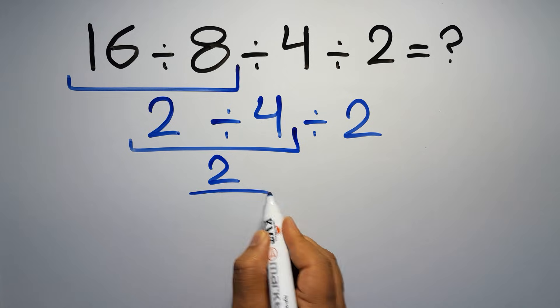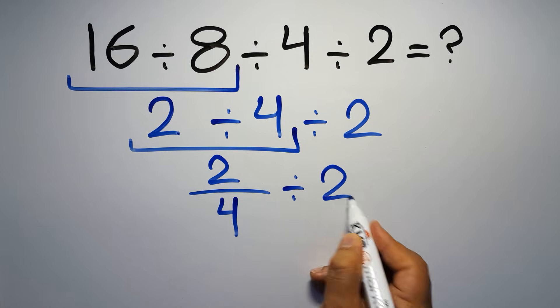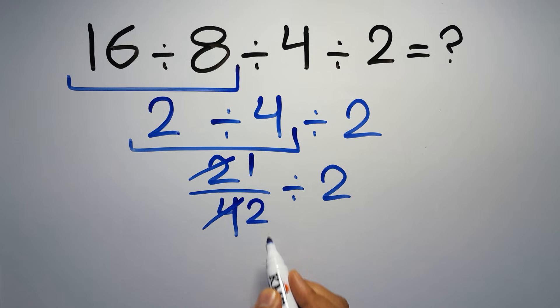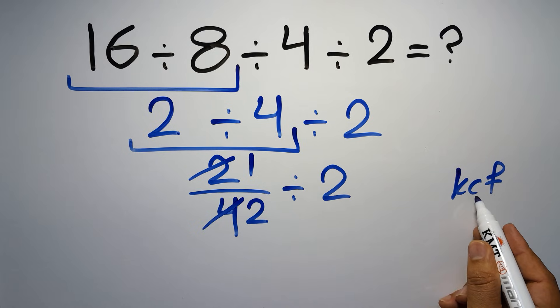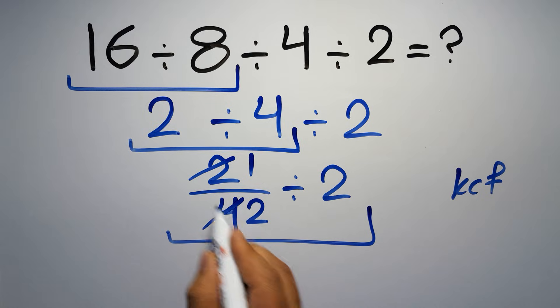2 over 4, then divided by 2. 2 divided by 2 gives us 1, and 4 divided by 2 equals 2, so we have 1 over 2 divided by 2. According to the KCF rule, K stands for keep, C stands for change, and F stands for flip. We can write: keep the first fraction, change the division